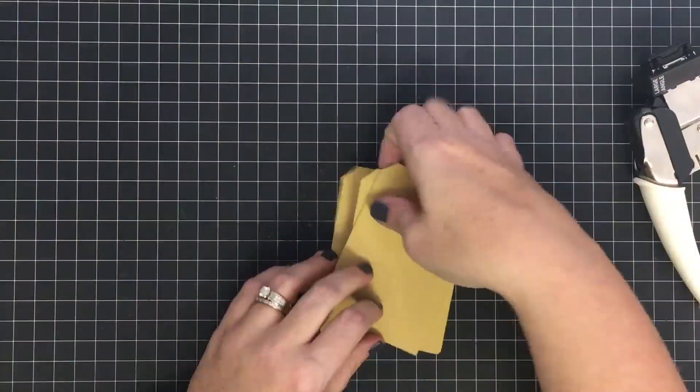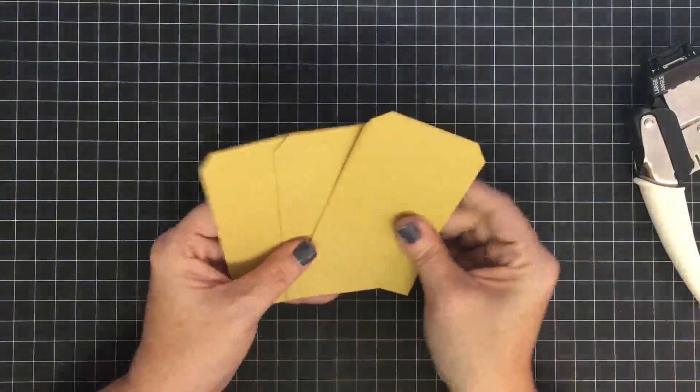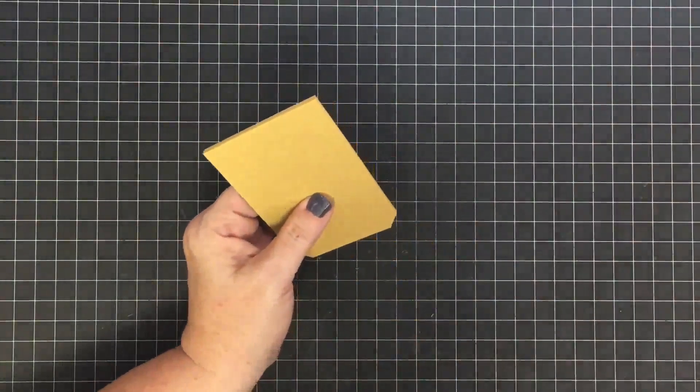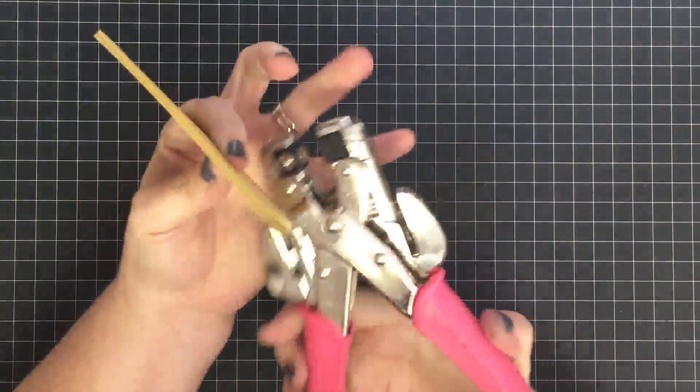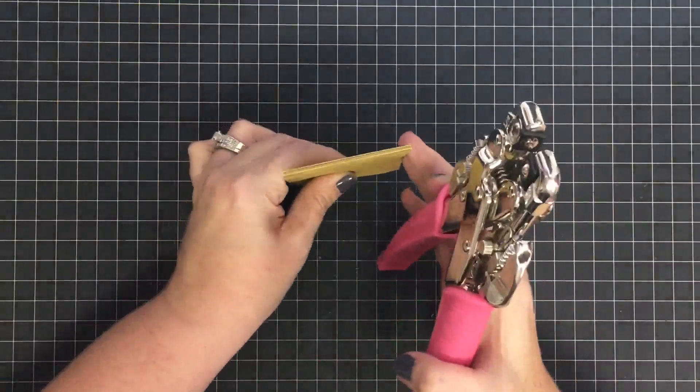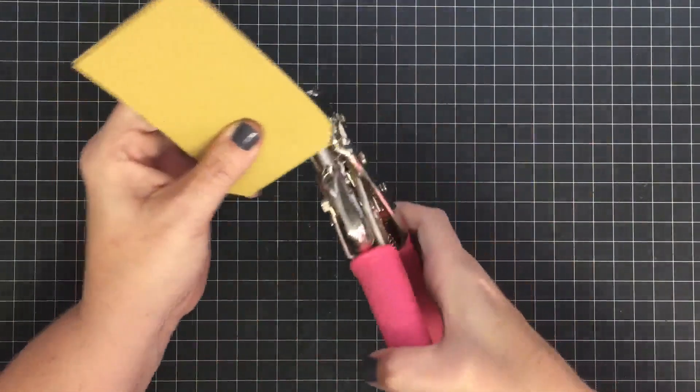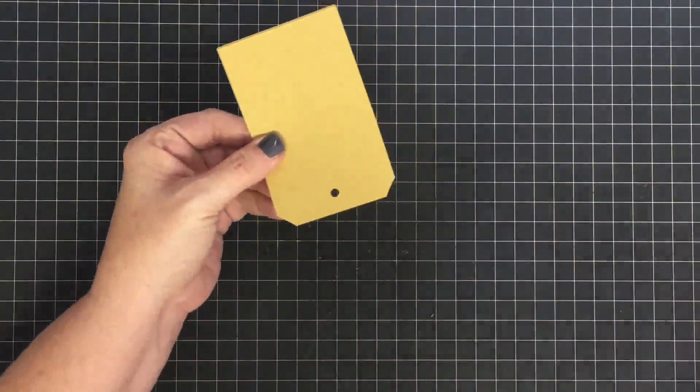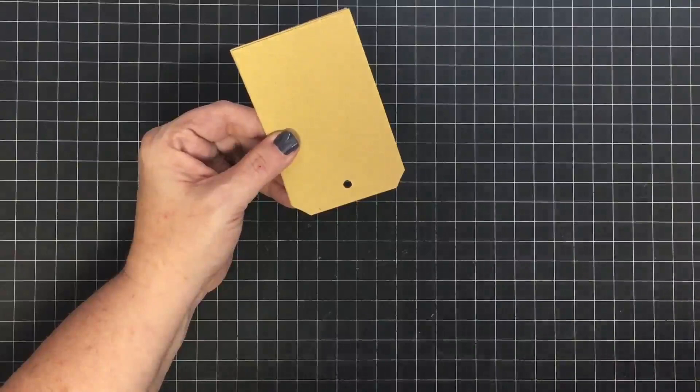Now I have eight tag-shaped cards ready to go. I need to place a hole in the tags. You can do this with a single hole punch and go through them all at one time, or I like to use this Crop-A-Dile and do them all at one time. I'm going to put that there and punch through my eight tags. Now they are ready to go.